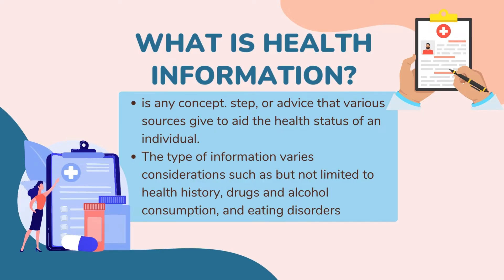The type of information varies depending on various considerations such as, but not limited to, health history, drugs and alcohol consumption, and eating disorders. Health information is like a guidebook to your well-being — it's all the stuff you need to know to make smart health choices, like understanding what's written on a medicine bottle, knowing how much sleep you should get, or learning how exercise affects your body.